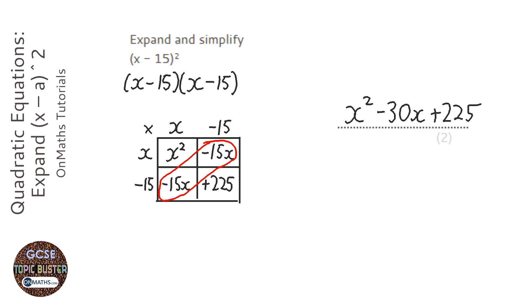Now the really common answer to this is people thinking it's x squared plus 225, and that is wrong. Students do that because they don't understand that you're squaring the whole bracket. You're not just squaring the things inside the bracket.